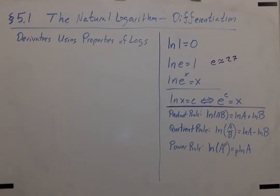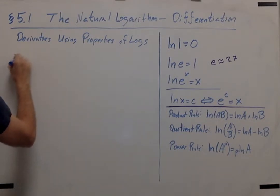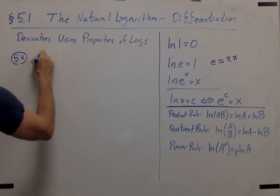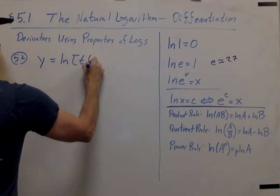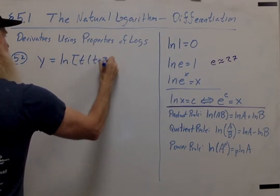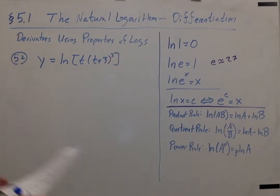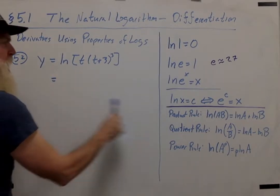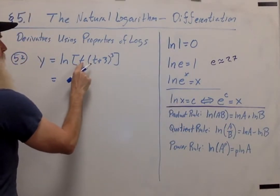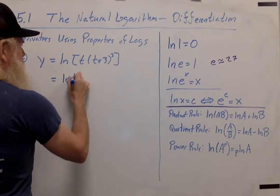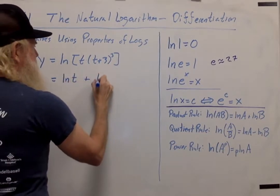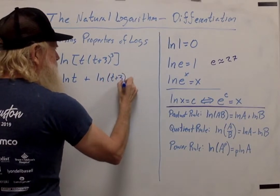First of all, let's look at problem number 52. Here we want to take the function y equals natural log of t times (t plus 3) cubed and find this derivative. The great idea is to expand it first and then take the derivative. So first of all, let's apply the product rule: log of t multiplied by (t plus 3) cubed will be the same as natural log of t plus natural log of (t plus 3) cubed.